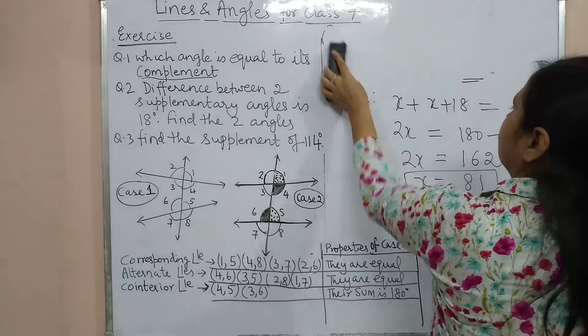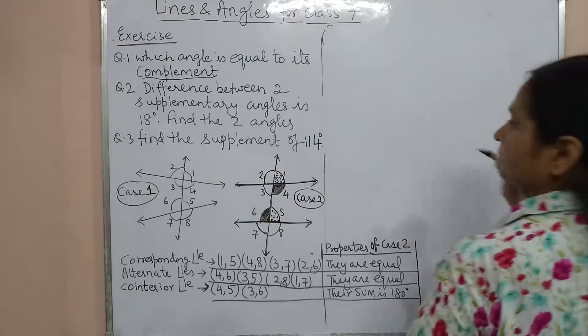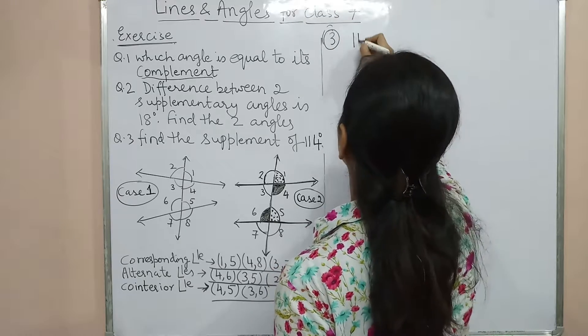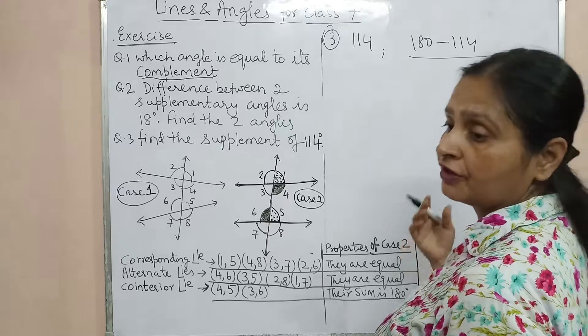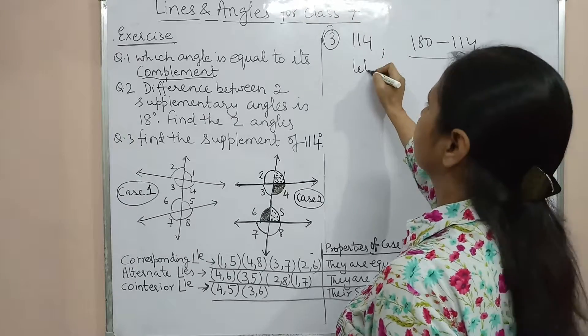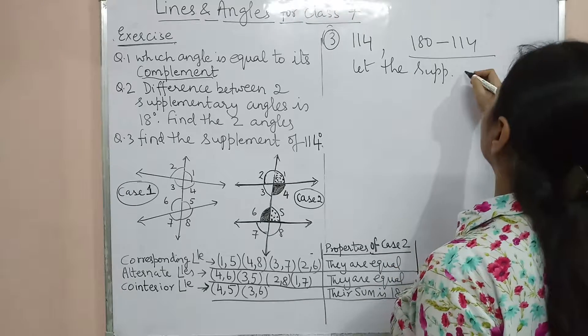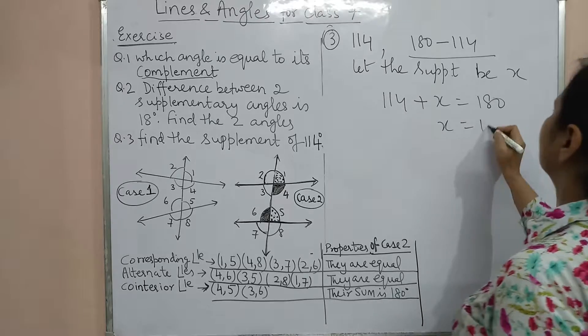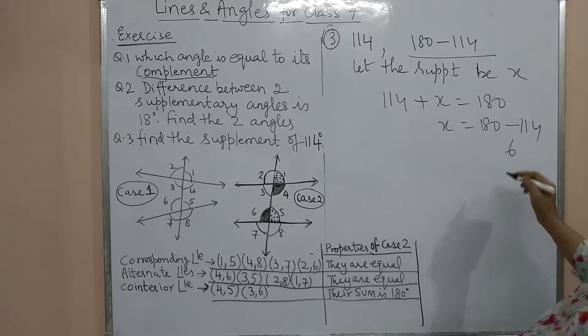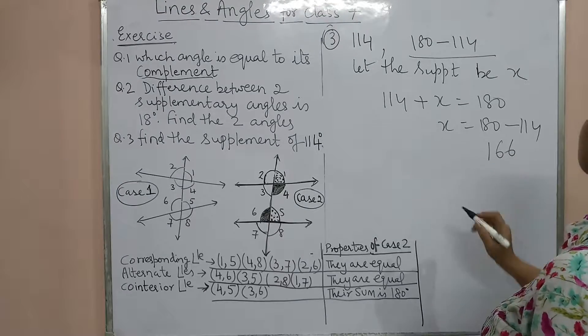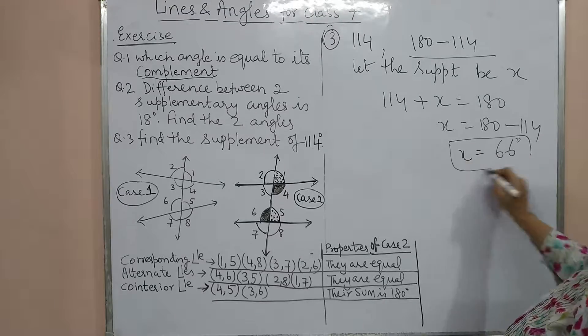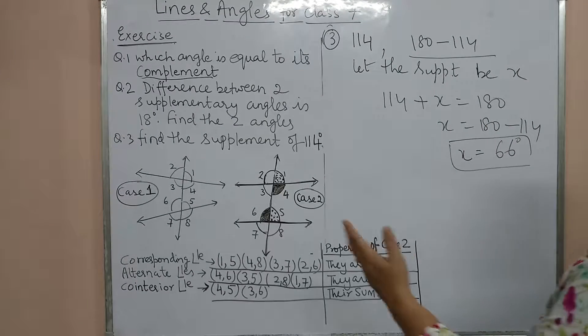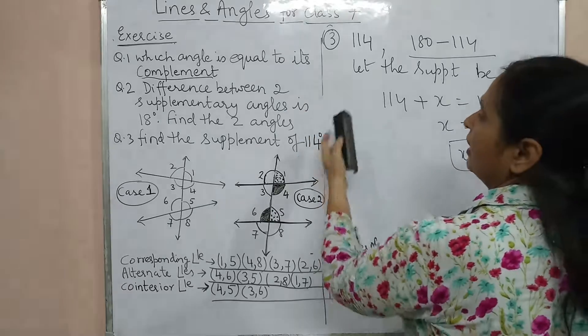Question 3: find the supplement of 114 degrees. The supplement will be 180 − 114 = 66 degrees. For a two-mark question, let the supplement be X, then 114 + X = 180, so X = 66 degrees. These are very simple questions based on supplementary and complementary angles.